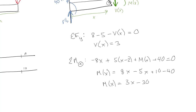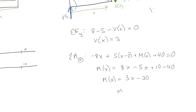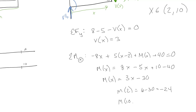This is valid for x going from 2 to 10. M at 2 would be 6 minus 30 which is negative 24 — so that's continuous, which is nice. And M at 10 is 30 minus 30, which is 0. Perfect.